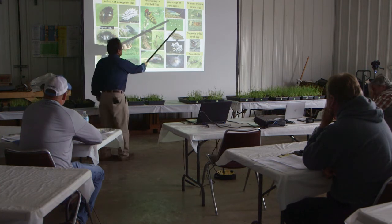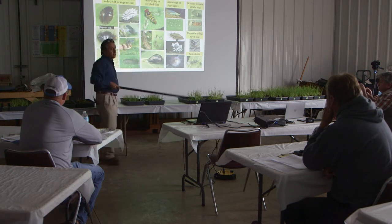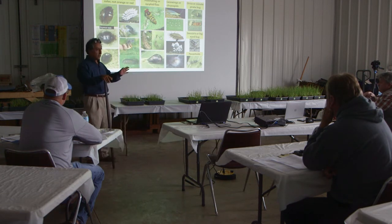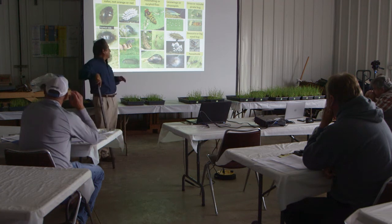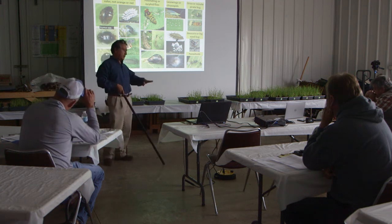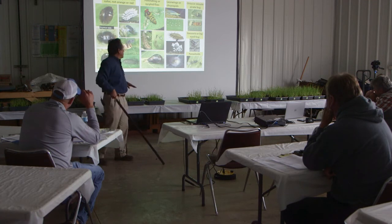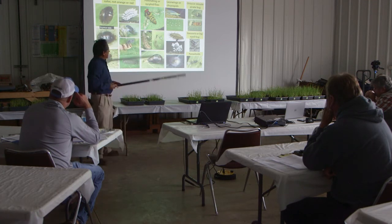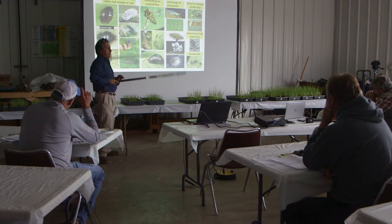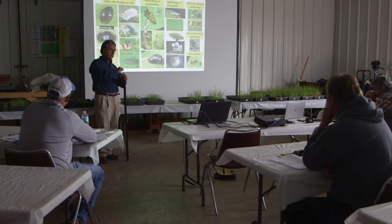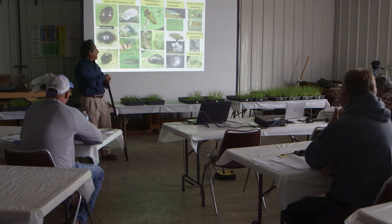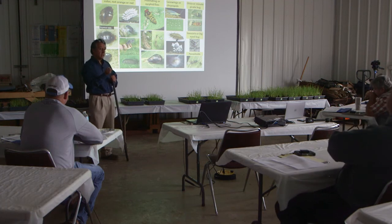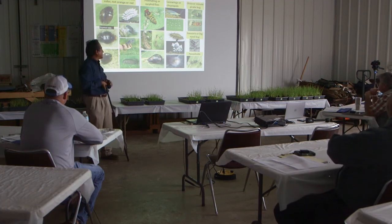We also have lacewings — at least two types. The brown lacewings lay eggs on the surface of the leaf, whereas the green ones lay eggs on the tip of a small hair. They do this because they are cannibalistic and can feed on their siblings.